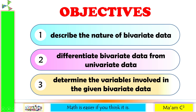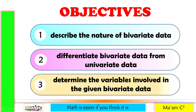Our objectives in this lesson are the following: describe the nature of bivariate data, differentiate bivariate data from univariate data, and determine the variables involved in the given bivariate data.